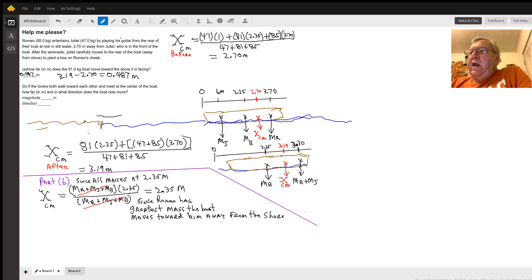Now we calculate the center of mass as the mass of the boat, 81, times its distance from our reference point, 2.35, plus the collective masses of Juliet and Romeo added together times 3.7, divided by the total mass.